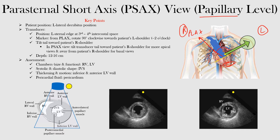In the parasternal short axis view, what we do is rotate it clockwise towards the patient's left shoulder — around two o'clock. And what we're doing now is, once we have it in that position, there are multiple levels we can look at. We can look at more of an apical view, down towards the apex, or more of a basal view. The basal view may give us an aortic valve level, while the more apical view would be more of the papillary level that we're looking at here.